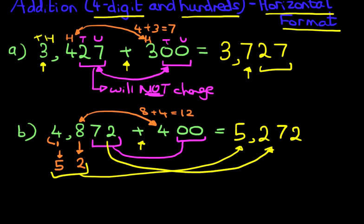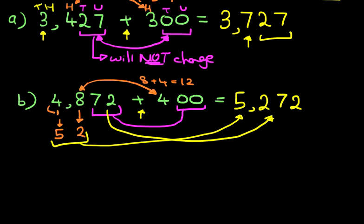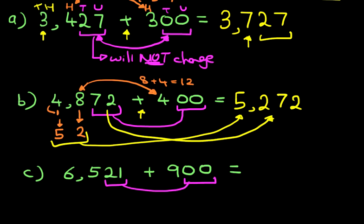Now, I hope you follow that clearly. If not, don't worry, we're going to work on one more. This time we've got 6,521 plus 900. Now, don't be afraid of large numbers, because the same principles apply. 21 adding to 00, we know that it's going to remain 21.